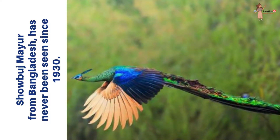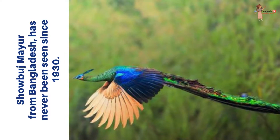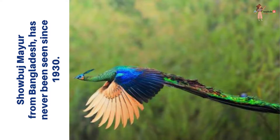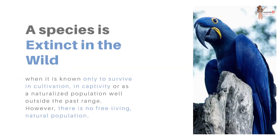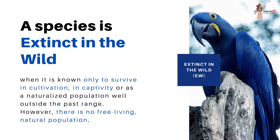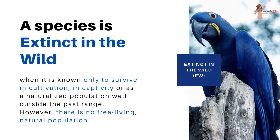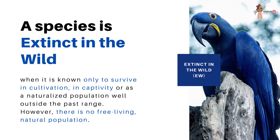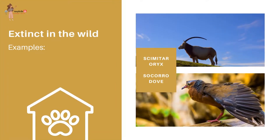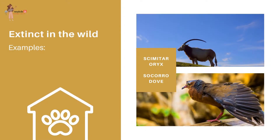See this beautiful bird — it is referred to as Shoboj Mayur, which means green peafowl. It was a native of Bangladesh but has not been seen since 1930. Extinct in the wild means a species which is known only to survive in cultivation, captivity, or as a naturalized population well outside its past range, with no free-living natural population. The Scimitar oryx and Socorro dove are examples of species that are extinct in the wild.